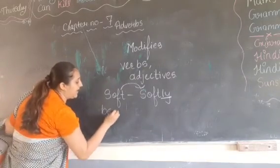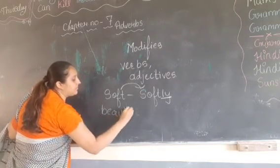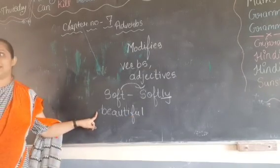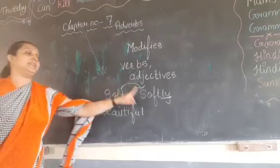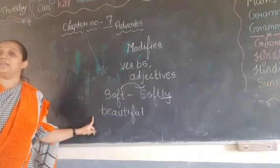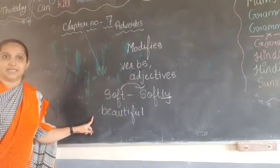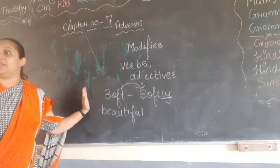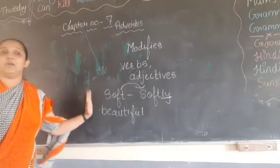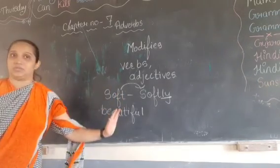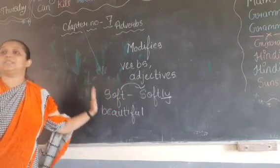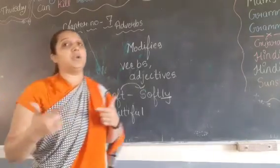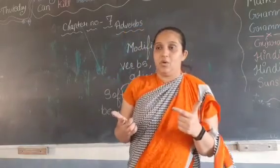For example, 'beautiful' is an adjective. If you want to change it into an adverb, you write 'beautifully.' Don't get confused between degree of comparison and adverb. Degree of comparison uses 'more' and 'most.' This is not an adjective — this is an adverb. You have to add 'ly' or modify the word.